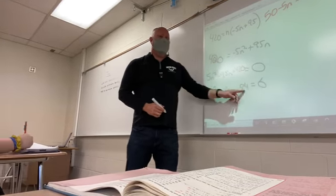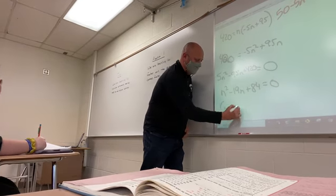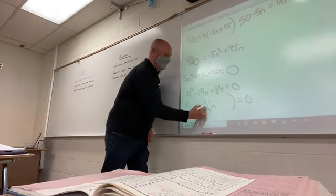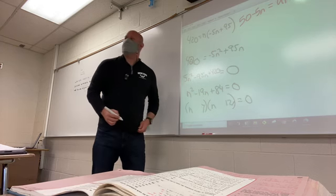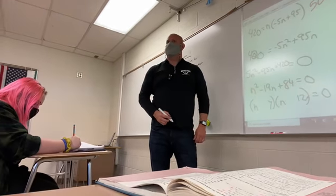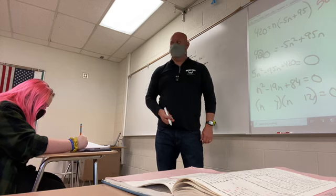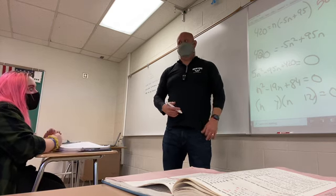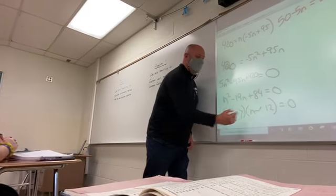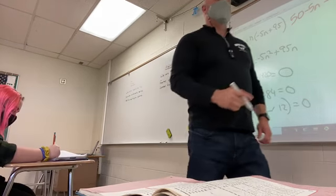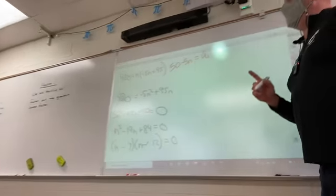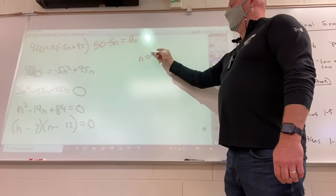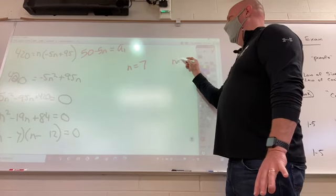All right. What two numbers multiply to 84 and add up to 19? How about 7 and 12? What's 7 times 12? 84. What's 7 plus 12? So that means I have two answers to this.